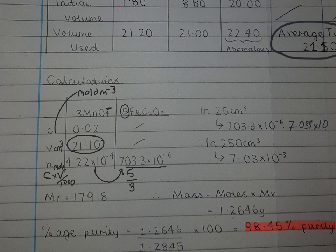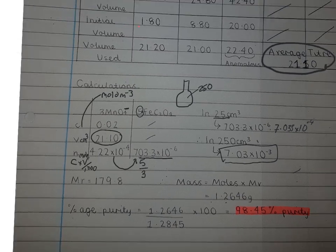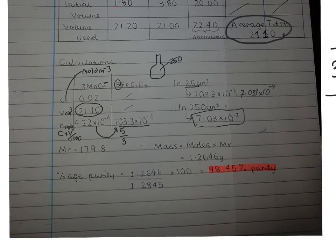...the iron ethanedioate. But don't forget that's in 25 centimeters cubed, but originally the mass that Emma obtained was dissolved in 250, and that's why she's times it by a factor of 10 here. So that is the amount of the iron ethanedioate, and now we know its amount, we can work out its mass.